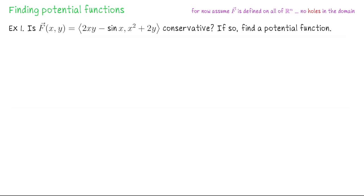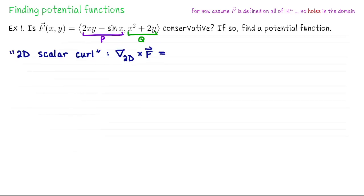First let's look at the test. In the language of the test, 2xy minus sin x is what we were calling the component function P, and x squared plus 2y is what we were calling Q. The test we've seen asks the question: is dP/dy equal to dQ/dx? I would like to rephrase that test in an equivalent way, by defining something called the 2D scalar curl — that's my language for it, not necessarily standard.